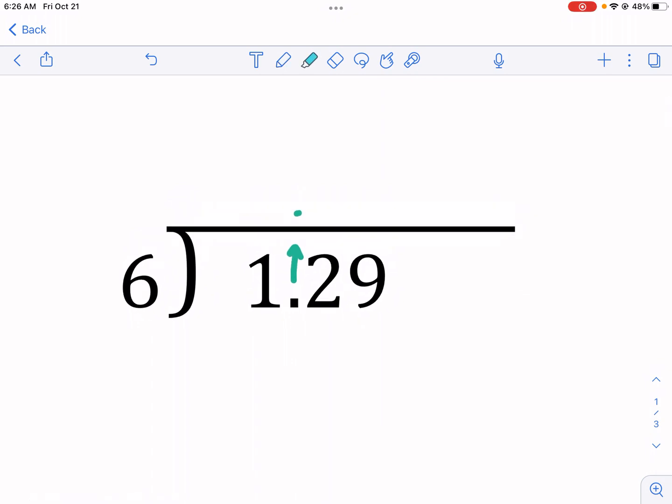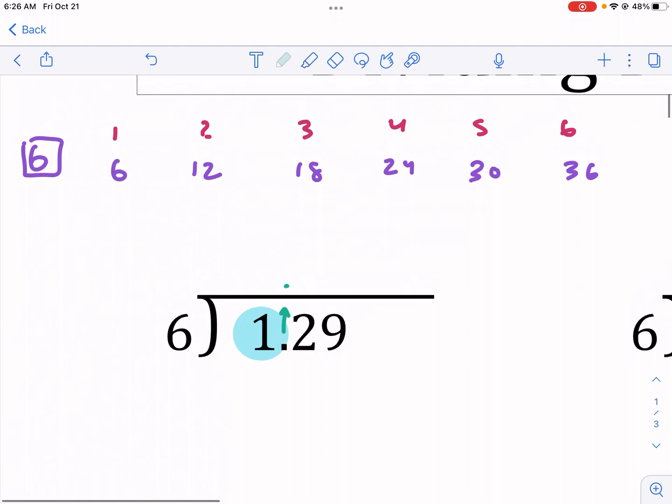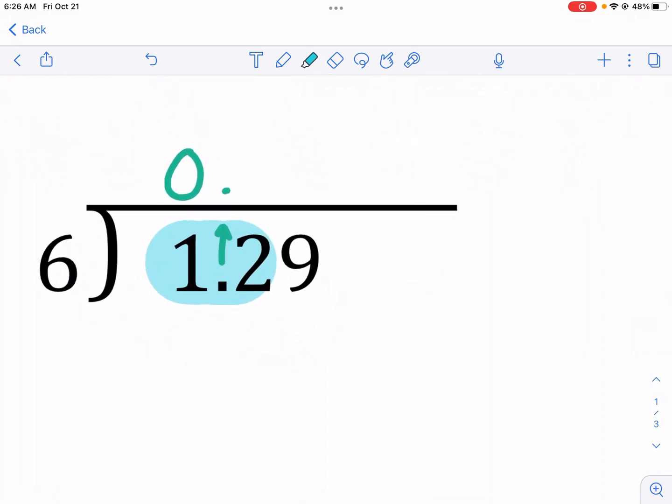Now, what we're going to do is we're going to consider 6 going into, okay, is it a multiple of? What do we multiply 6 by to get each one of these digits? So, if we do 6 times something equals 1, well, nothing. Nothing times 6 will equal 1. It's too big. So, we're going to write a 0 right there.